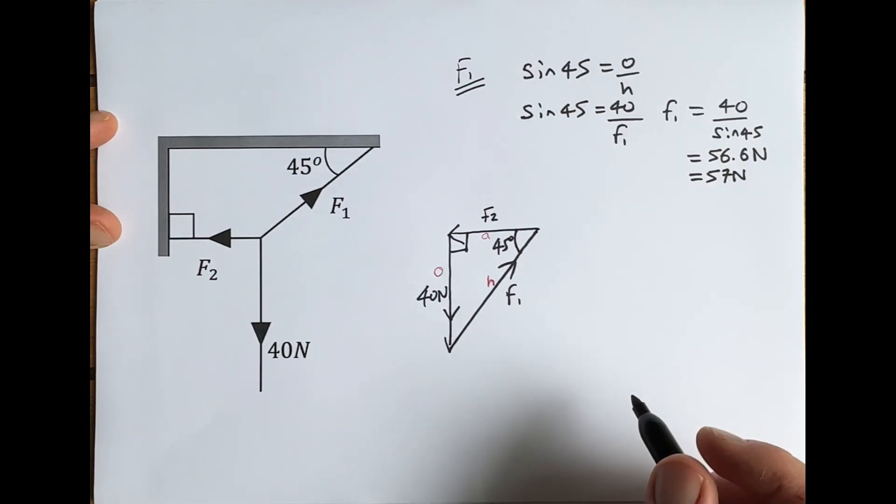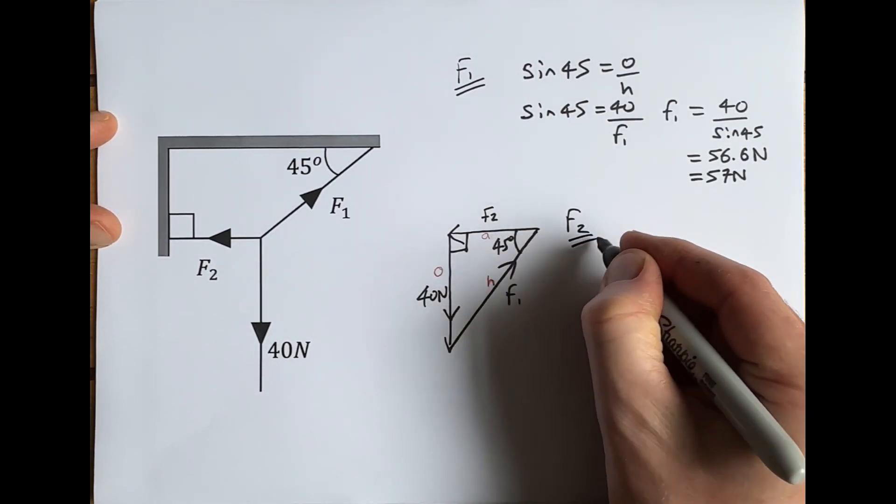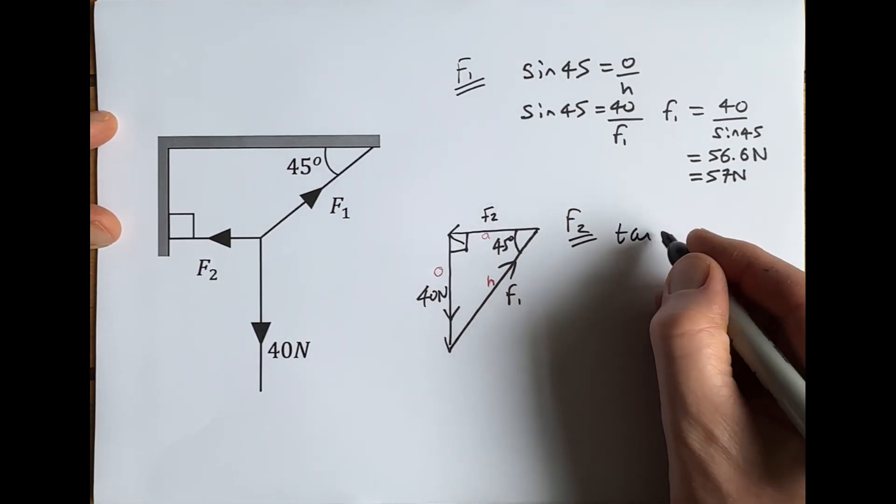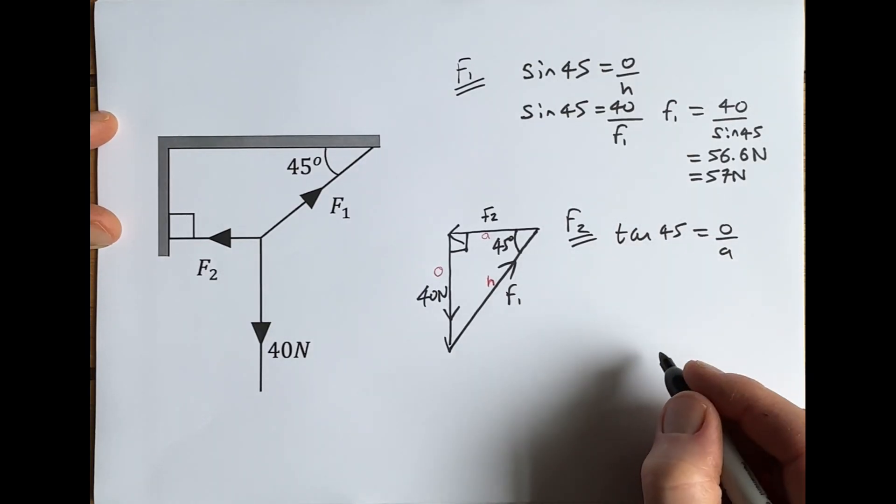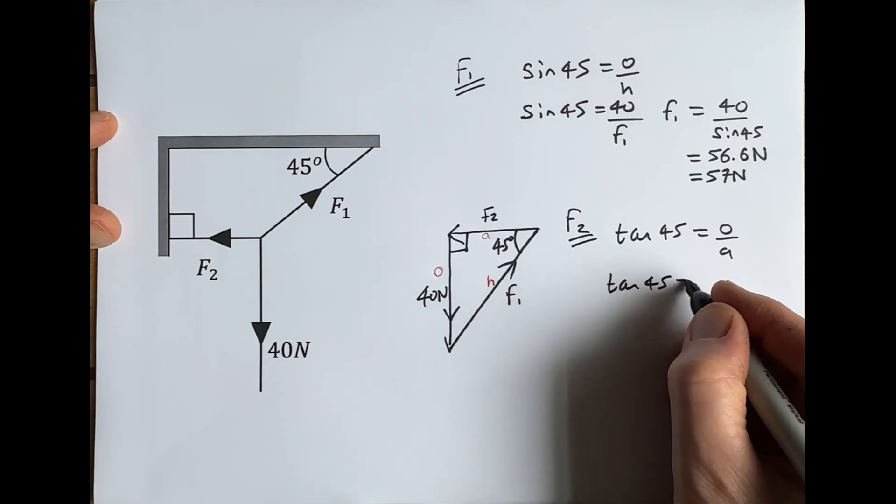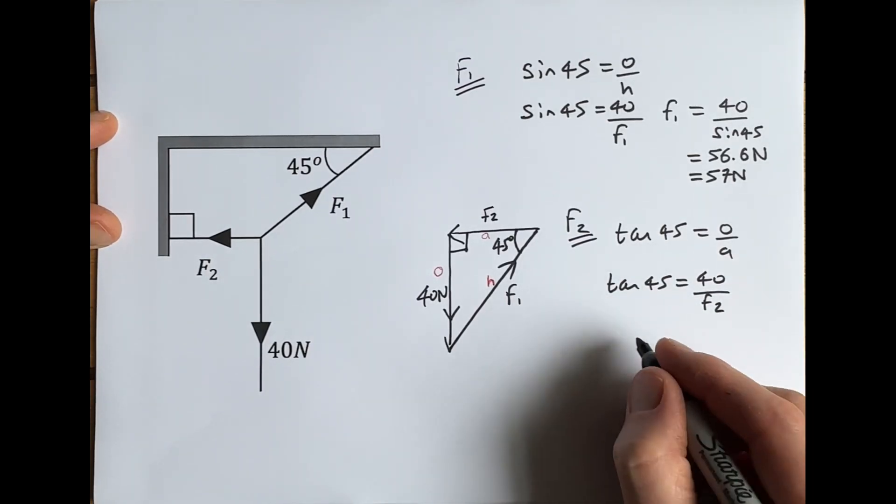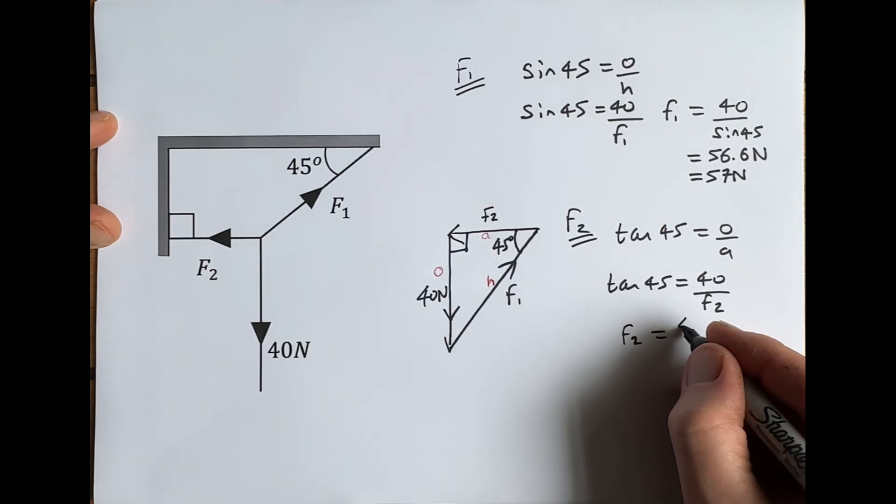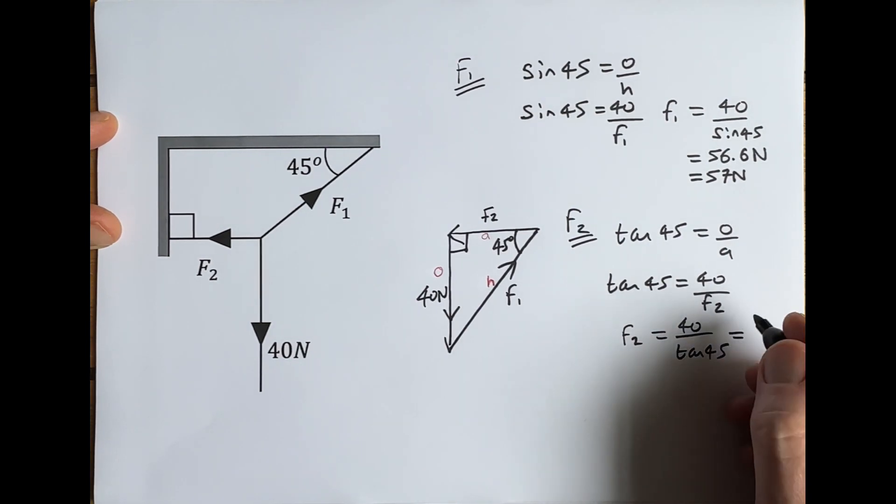To work out F2, we know it's opposite and adjacent, so tan of 45 is equal to opposite over adjacent. Tan of 45 must be equal to 40 over F2, so F2 equals 40 over tan 45, and if you work that one out you're going to get 40 newtons.